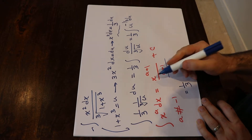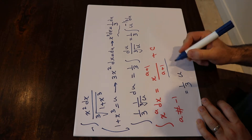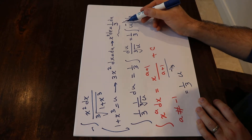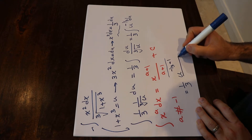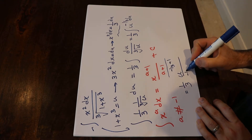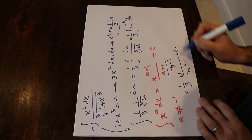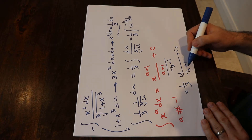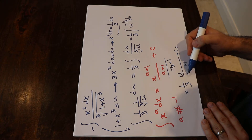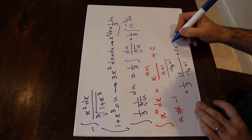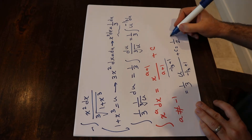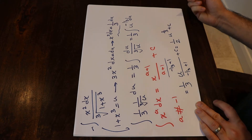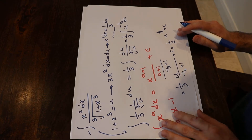Applying the formula: the result is 1/3 times u to the power of a plus 1, where a is minus 1/3, so a plus 1 equals 2/3, divided by 2/3 plus the constant of integration. The 1/3 and the 3/2 simplify so that you get 1/2 times u to the power of 2/3 plus C.